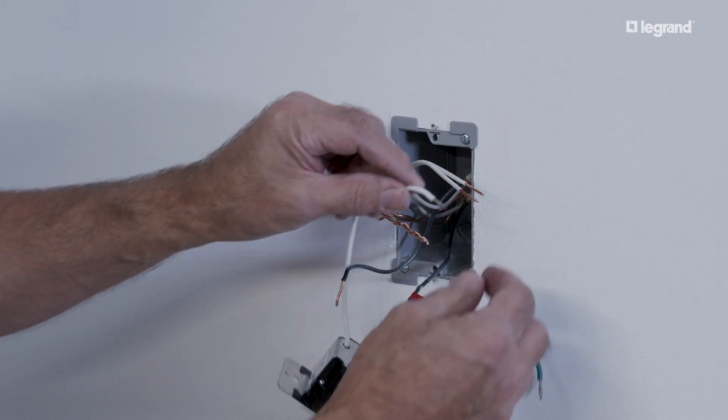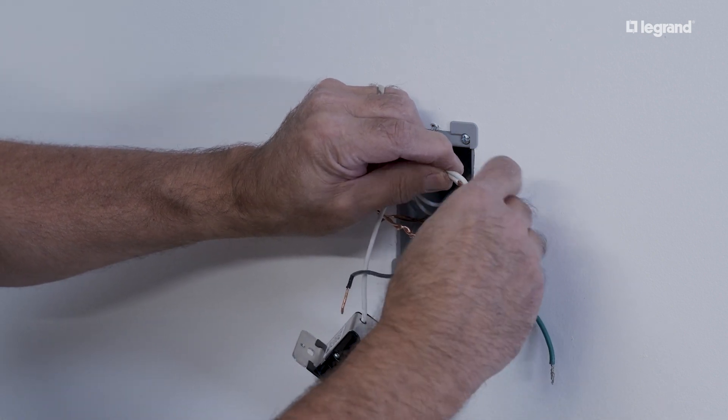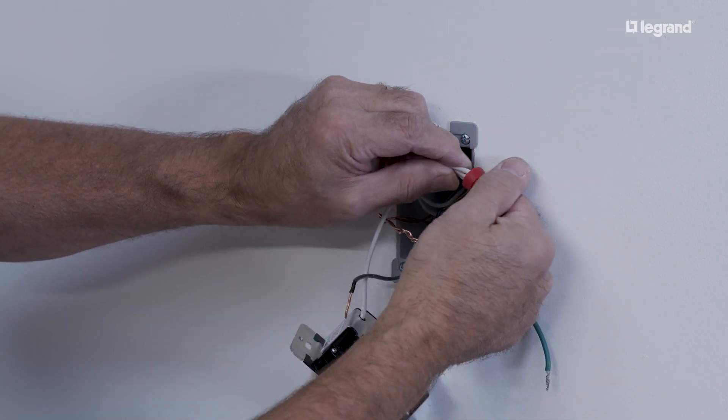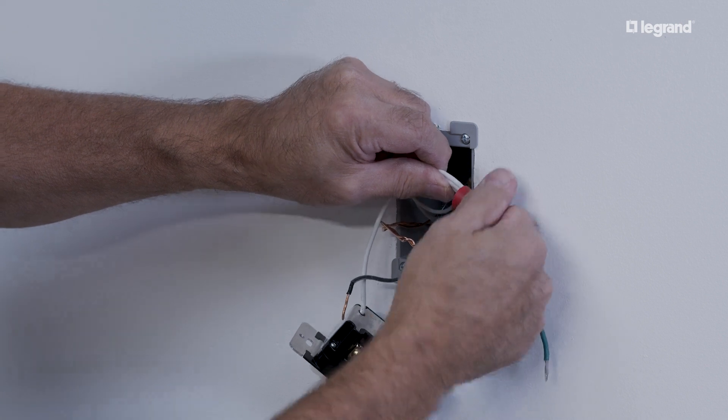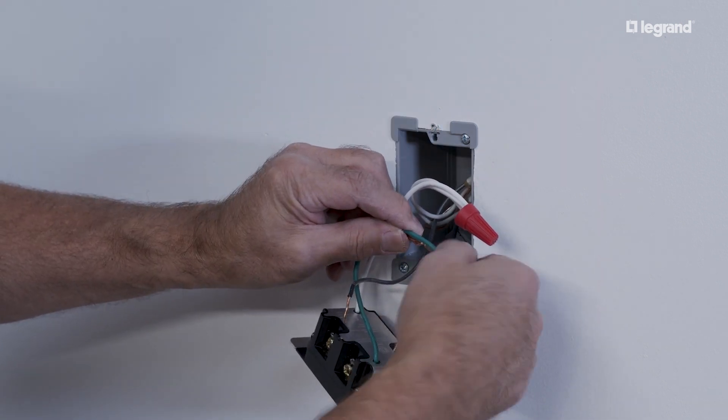To start, bundle the white neutral wire with the existing neutral wires in your electrical box by twisting them in a clockwise direction together and secure with the included wire nut. Next, bundle your switch's ground wire with the ground wire in the box.